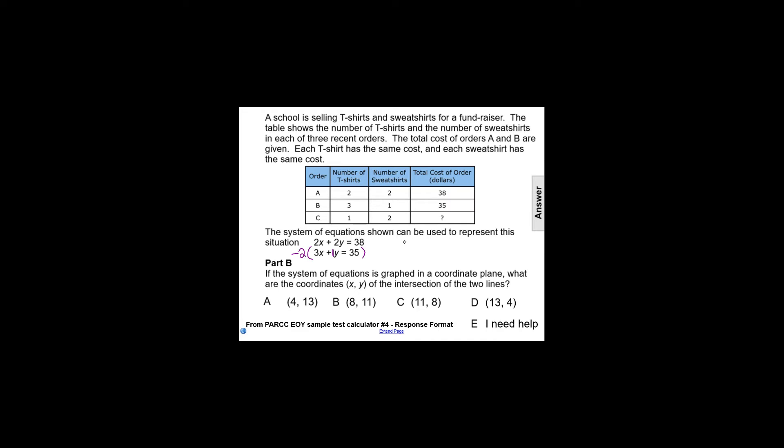That will create the system where the first equation is the same, 2x plus 2y equals 38, but the second equation becomes negative 6x minus 2y equals negative 70. And now if we add those two equations, we eliminate the y's because 2y plus negative 2y is 0.